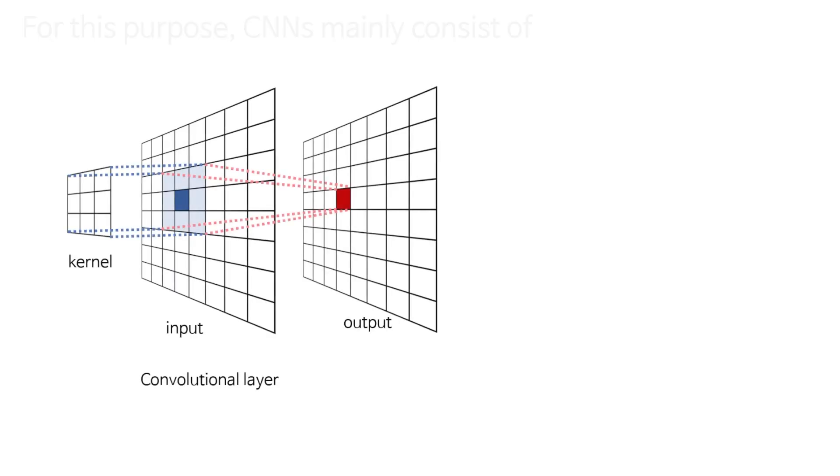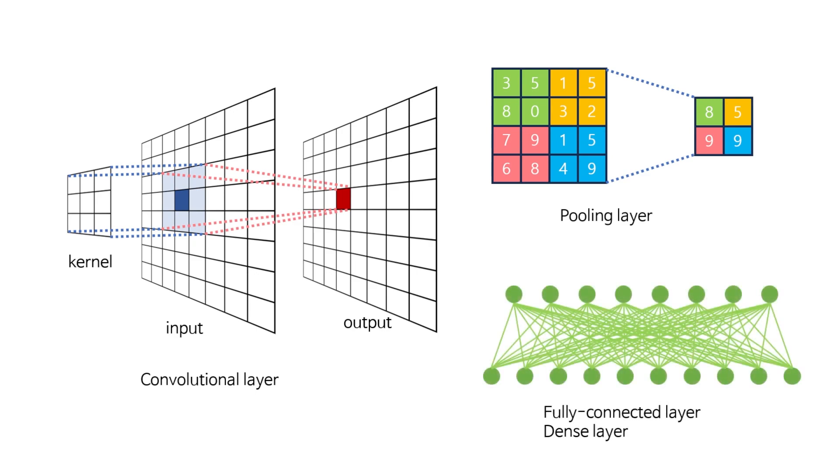For this purpose, CNN mainly consists of Convolutional Layer, Pooling Layer, and Fully Connected Layer. CNNs are made up of these layers.